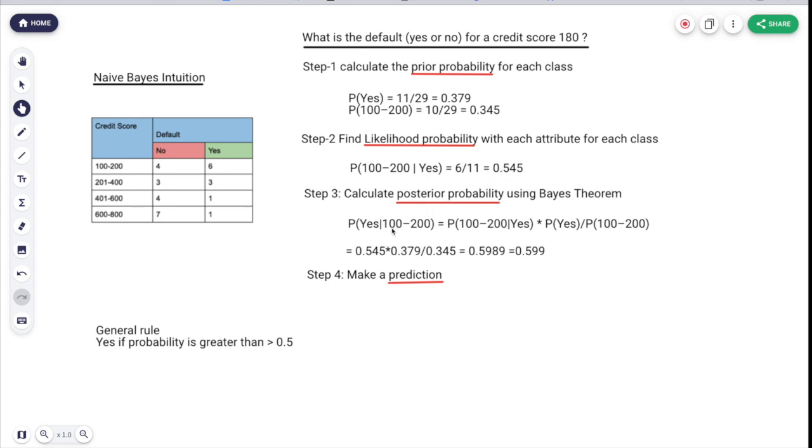Step 3: Now the final thing, we will calculate the posterior probability. We will calculate the probability of one class and the other class will be one minus of that because we know the sum of each outcome probability will be one. We will calculate P(Yes|100-200), as we know it's 180. The formula is P(100-200|Yes) times P(Yes) divided by P(100-200). Just fit in into this formula and we will get the result as 0.5409 or 0.599.